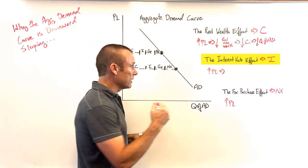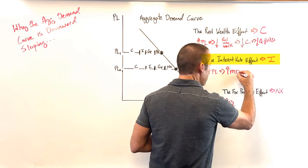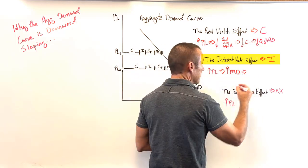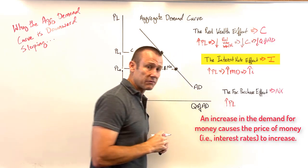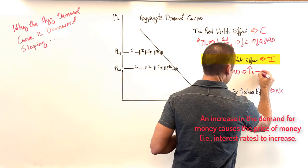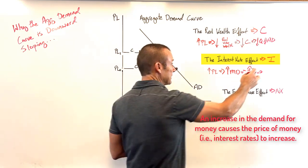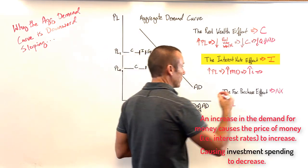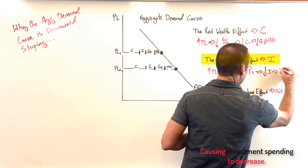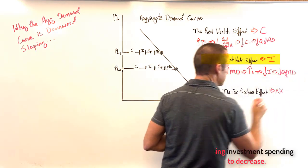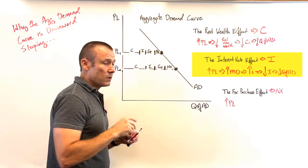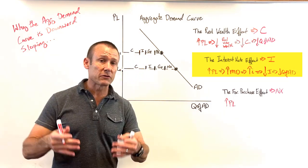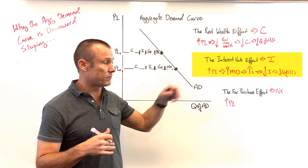As I move more wealth into M1 money assets, I'm demanding more money and making less available for lending to others. This is an increase in money demand, and when money demand increases, the price of money — the interest rate — goes up. When the interest rate goes up, the most sensitive type of spending is investment, so investment goes down, which gives us a decrease in the quantity of AD.